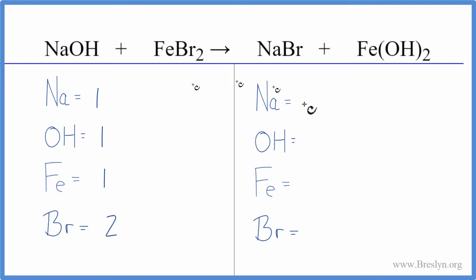On the product side I have one sodium, one hydroxide times two so I have two of those, one iron, and then one bromine. This makes it a lot neater. Now I can see right away that if I double my bromine...